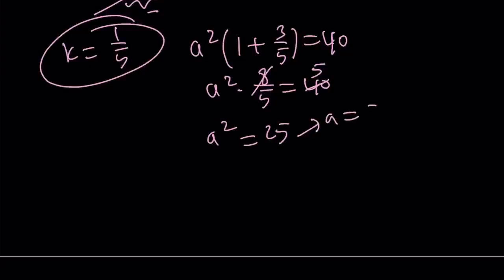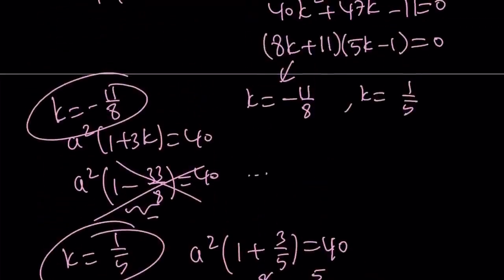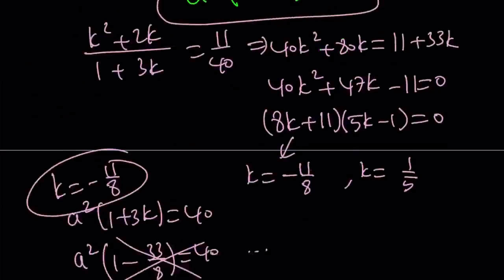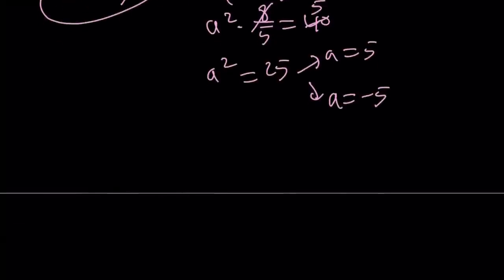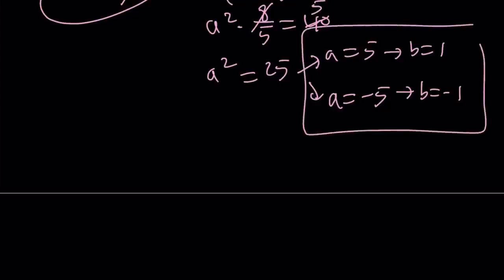From here, a is either 5 or negative 5. But remember, b equals a times k and k equals 1 fifth. So if a is 5, then b is 1. If a is negative 5, then b is negative 1. So we got the solution pair.